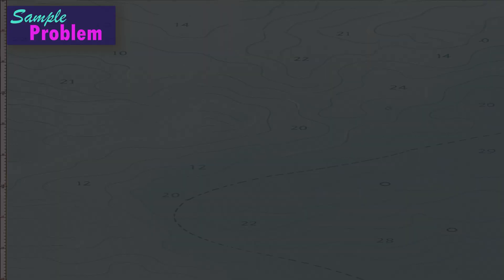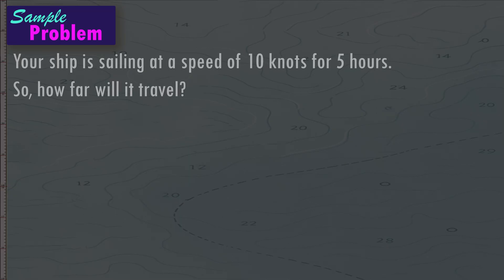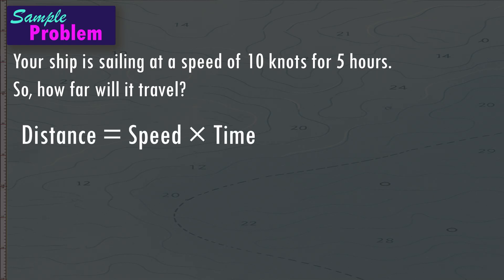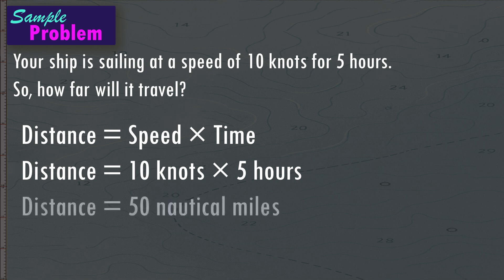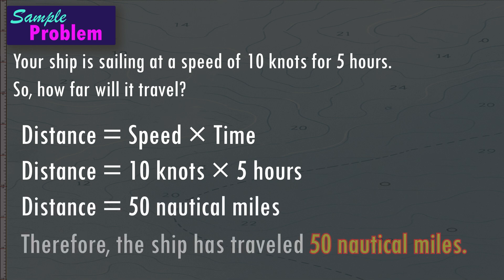Part two: finding distance. Sample problem — your ship is sailing at a speed of 10 knots for 5 hours. How far will it travel? To find the distance, we use the formula: distance equals speed multiplied by time. Substituting the given values: distance equals 10 knots multiplied by 5 hours. The result is distance equals 50 nautical miles. Therefore, the ship has traveled 50 nautical miles.